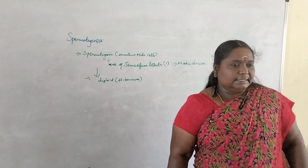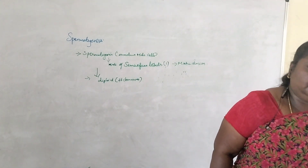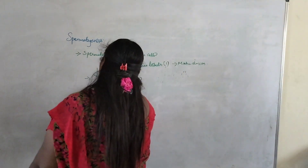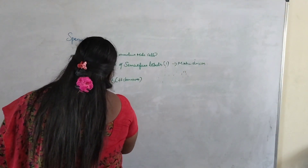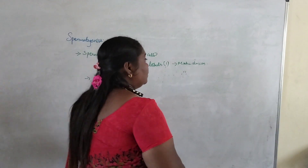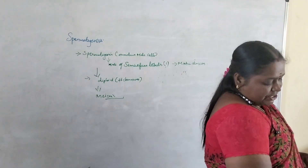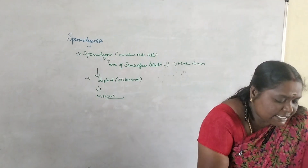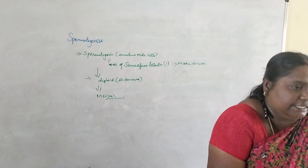What division do spermatogonia undergo? This is for the meiotic division. The final step is to complete the first meiotic division.